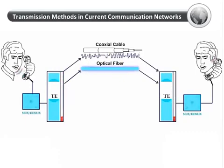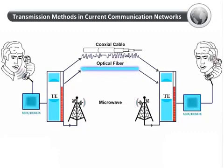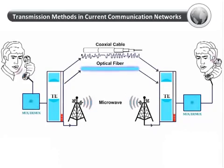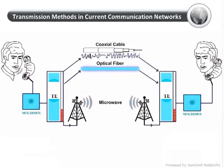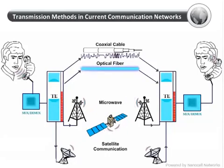Wherever the installation of cables is a problem, microwave links come to the rescue. However, they require line of sight — that is, the two endpoints of the link must have a clear, direct path for the signal to travel, which restricts their use to really short distances. Satellites communicate with earth stations, providing a link between different parts of the globe. Most international calls and television signals are routed via satellite networks.